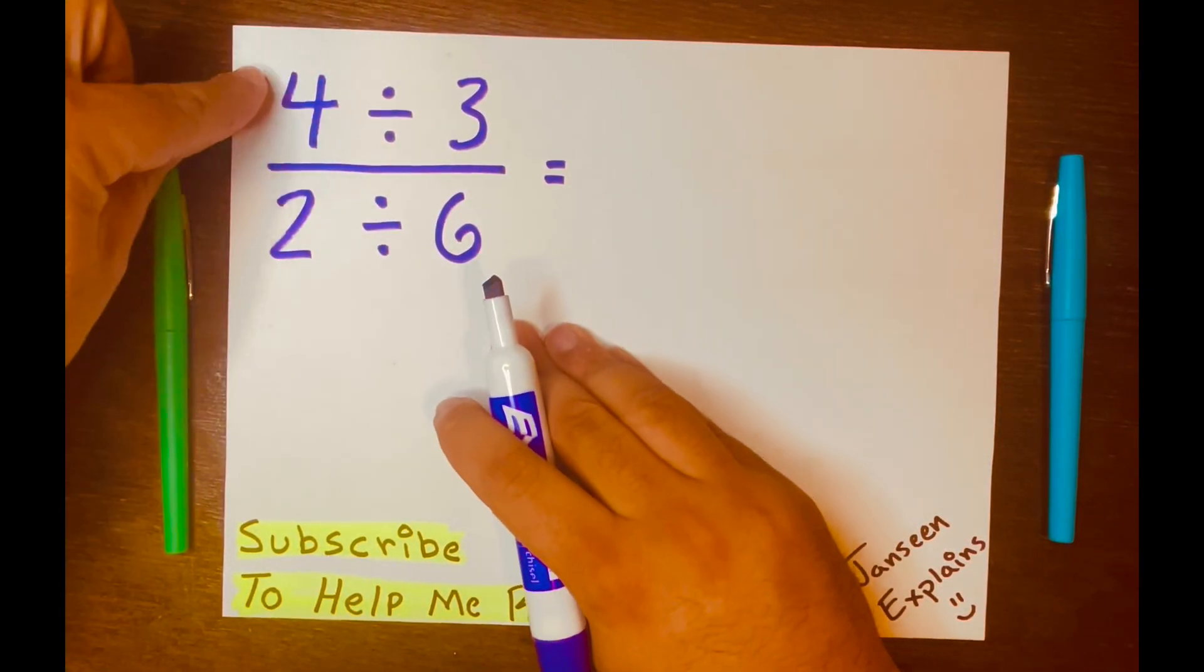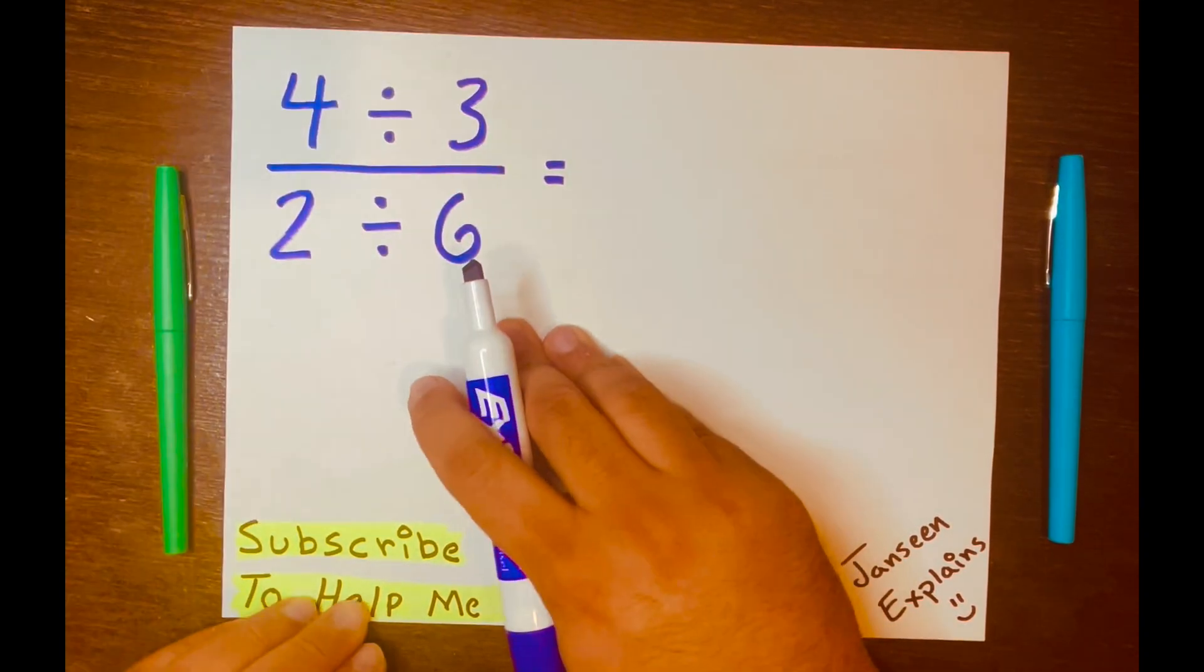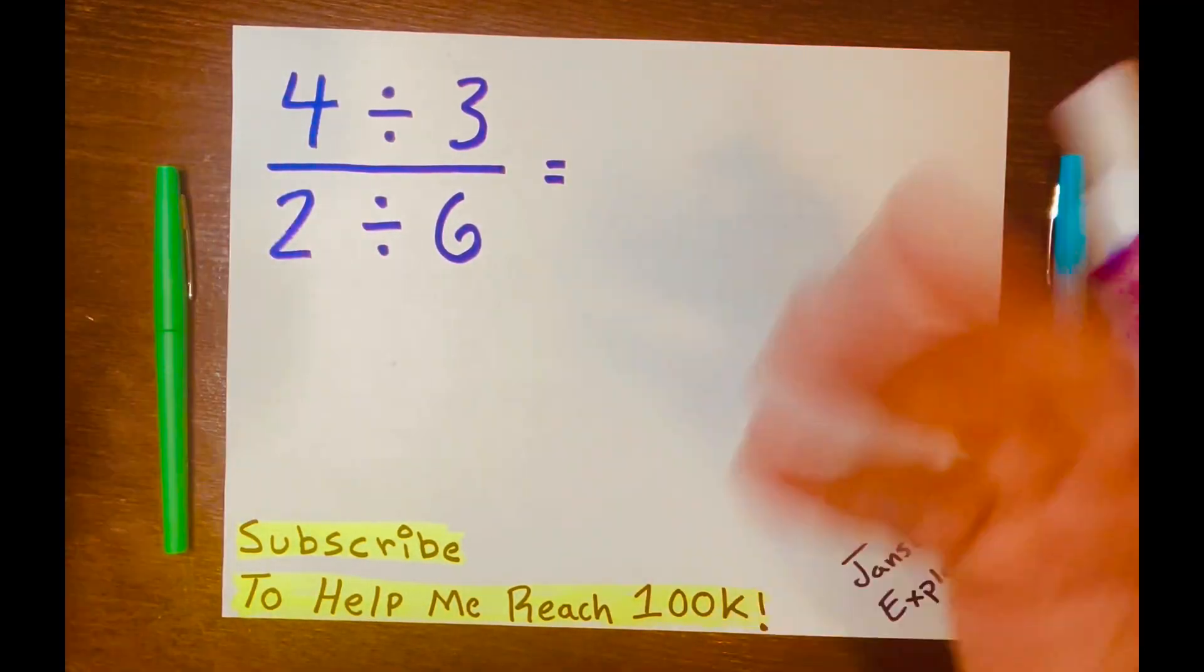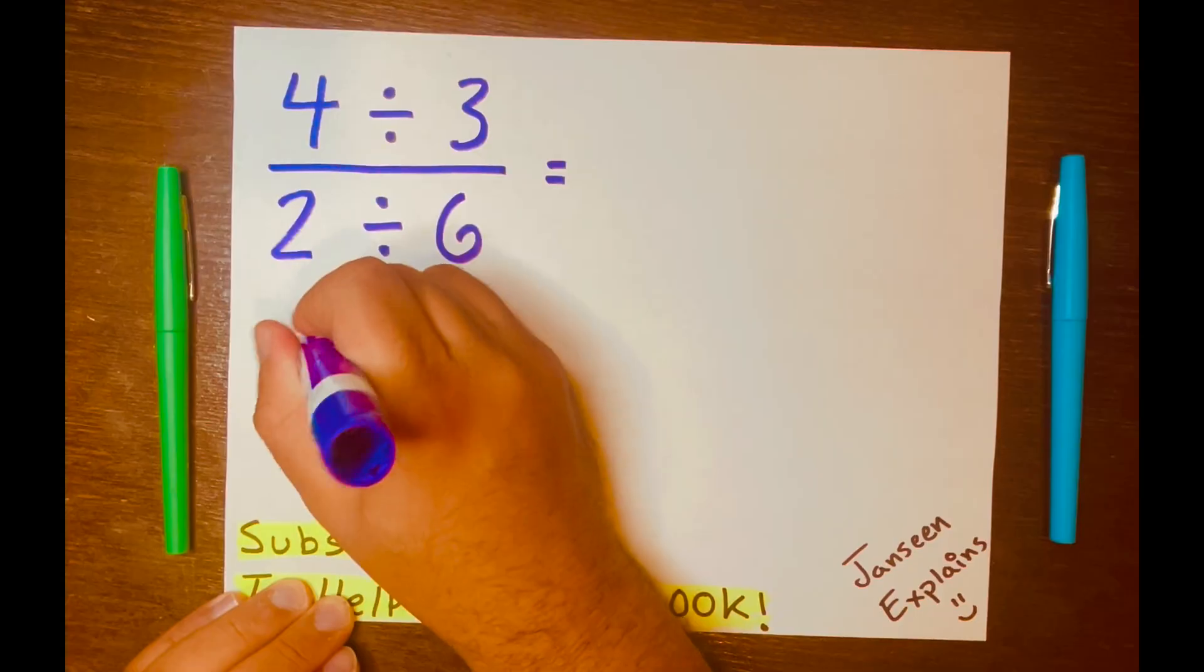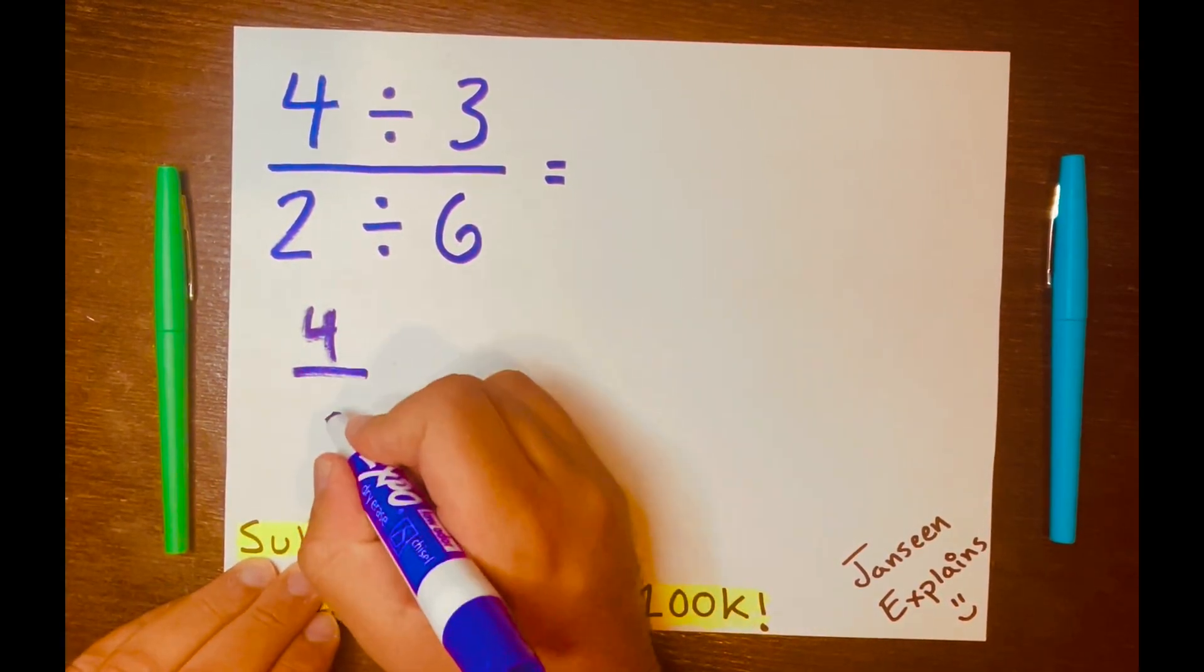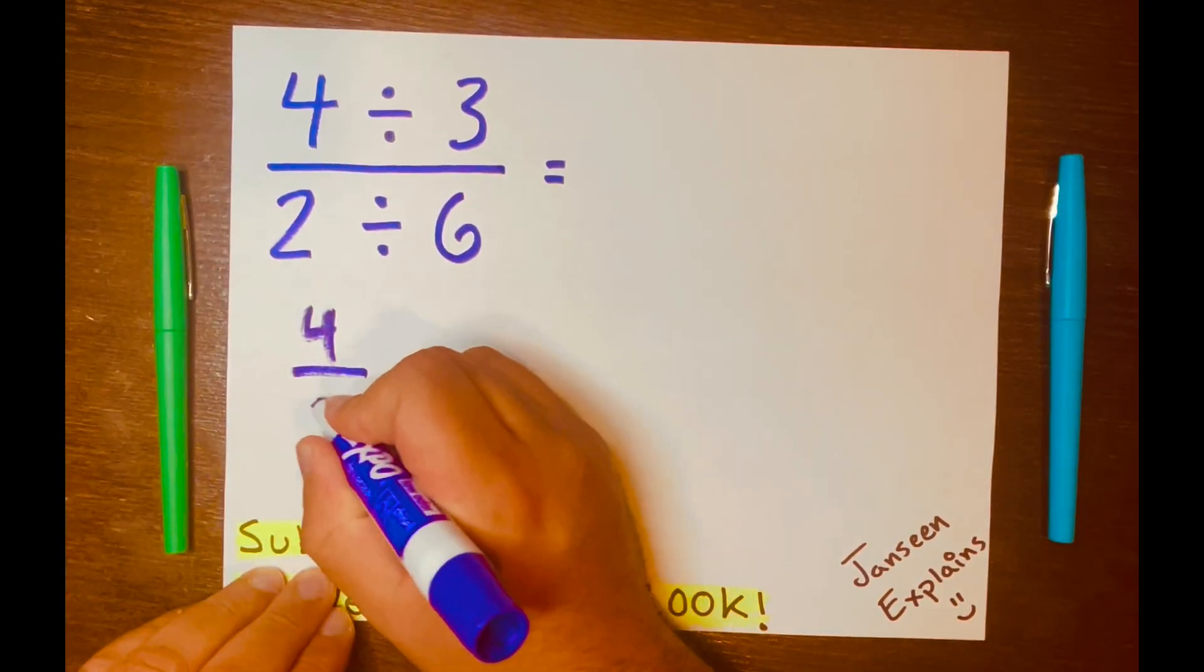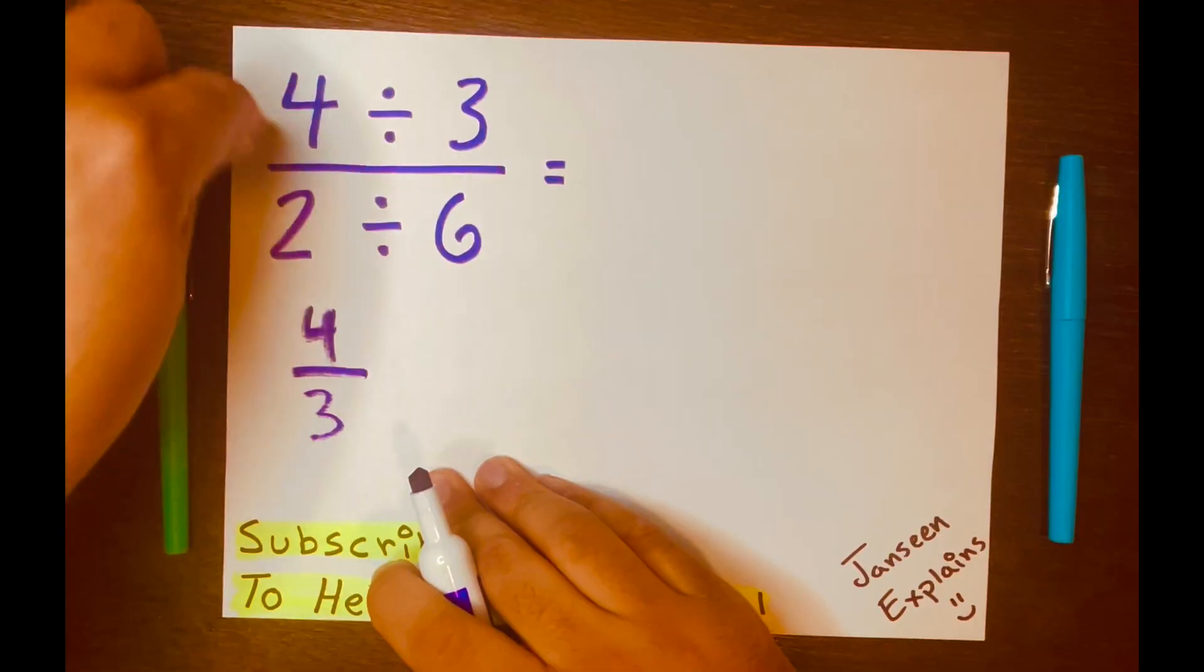So first things first, we keep the top part of the fraction and we want to turn this four divided by three into a fraction because we want to make the math easy. So we write four, and I am running out of ink, four divided by or four over three. That is the fraction form of the top part of this fraction.